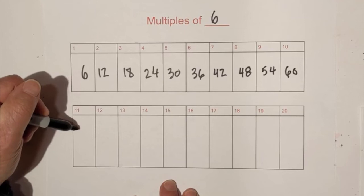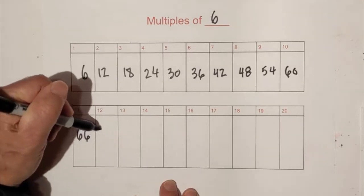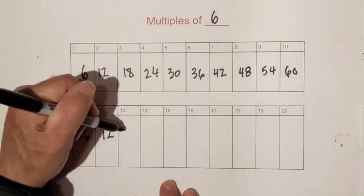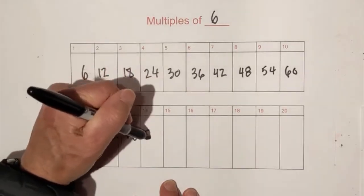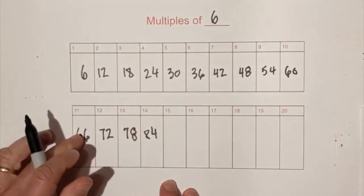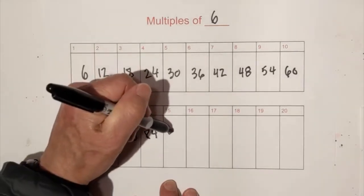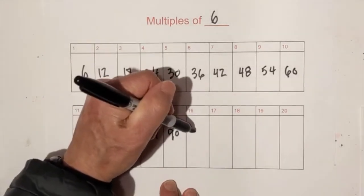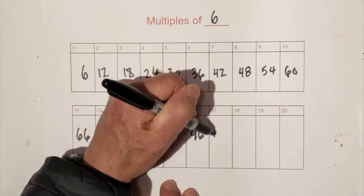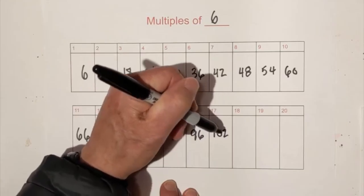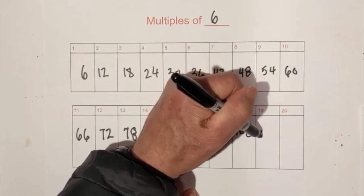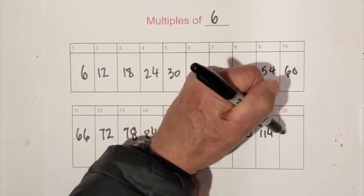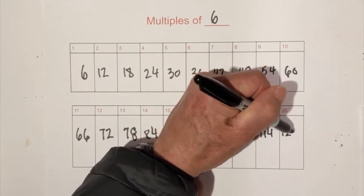Once again, it's kind of the same pattern again, 66, 72, 78, and you can see the pattern going on, 84, that's a bad 8 by the way, and we have 90, and then we have 96, 102, 108, and we have 114, and finally 120.